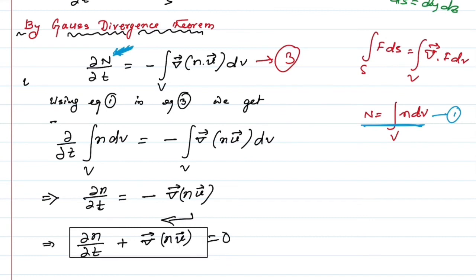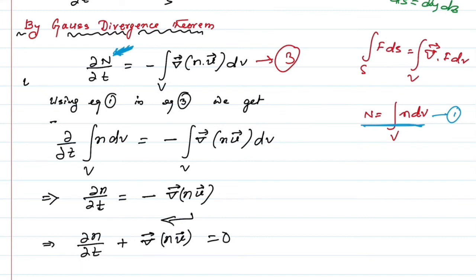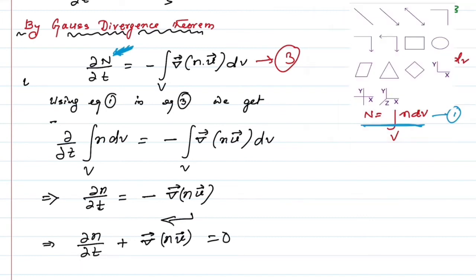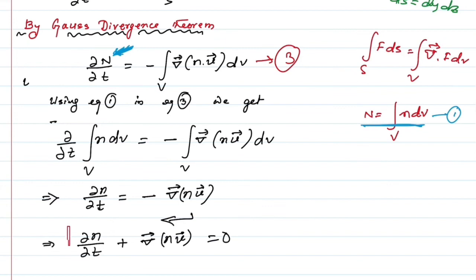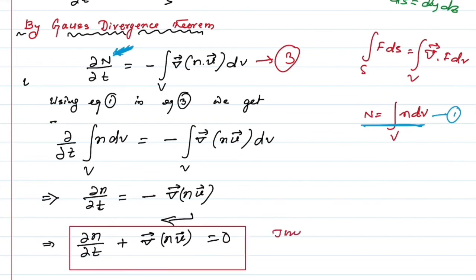This gives us del n by del t equals minus divergence of (n times u). Bringing this term to the left side, we get del n by del t plus divergence of (n u) equals zero. This is the required equation — this is the equation of continuity.